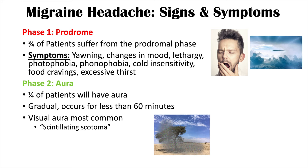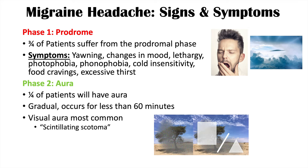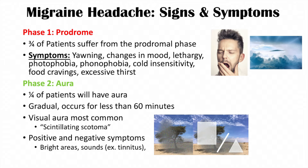Some patients can also see certain shapes that block or impair their vision, and some may have a reduced ability to see during a visual aura. Other aura symptoms include both positive and negative symptoms: bright areas in the visual field, sounds like tinnitus (ringing in the ears), and in some patients, loss or reduction of sensory inputs such as hearing or vision.